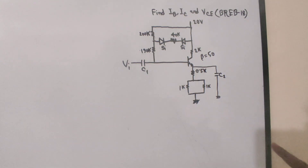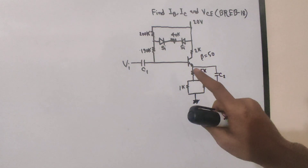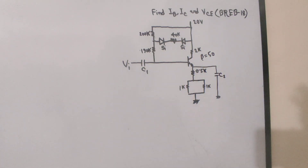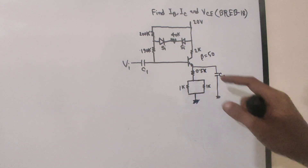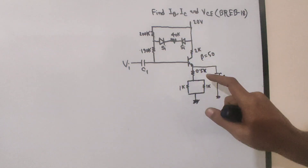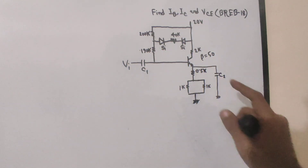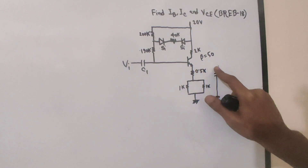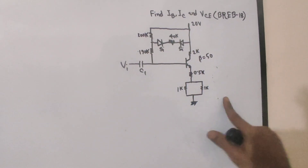The first thing we need to see is the DC biasing. We need to differentiate between AC and DC. For DC biasing, a capacitor is an open circuit — that means any branch with a capacitor becomes an open circuit.